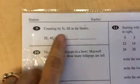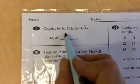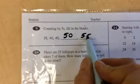So here it says counting by fives, fill in the blanks. Well, 35, 40, 45, what would come next here? 50. And the next, 55, because we're counting by fives.